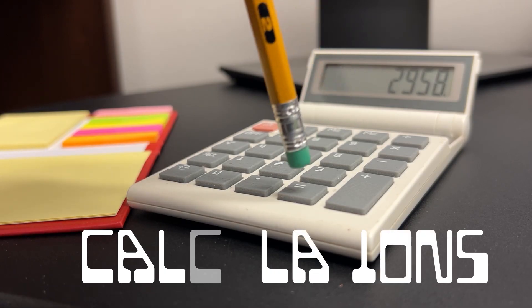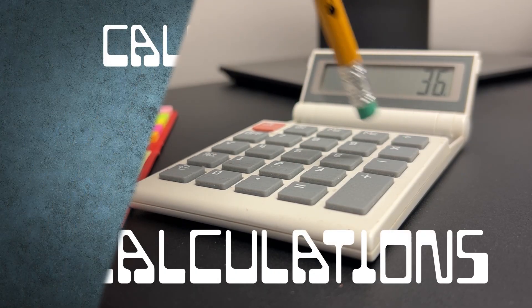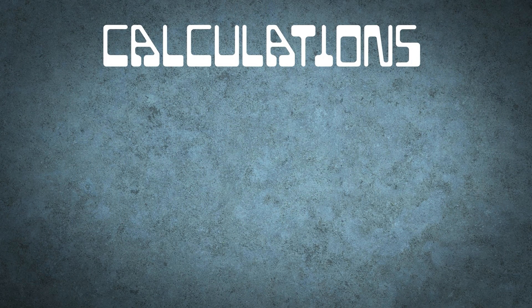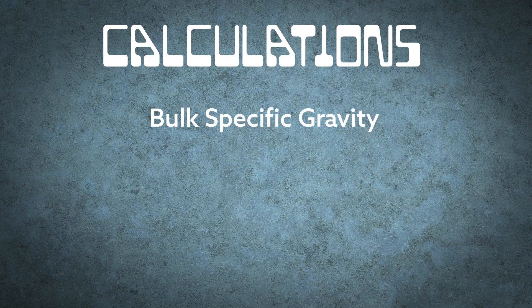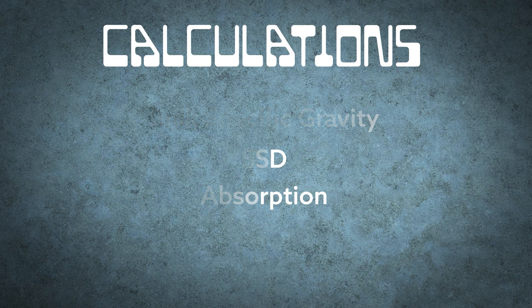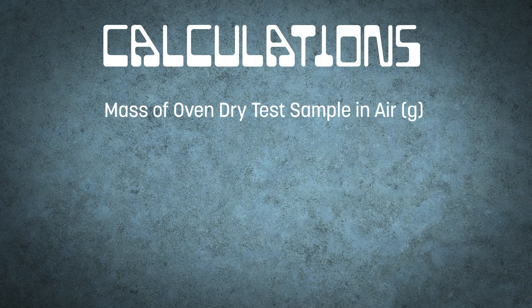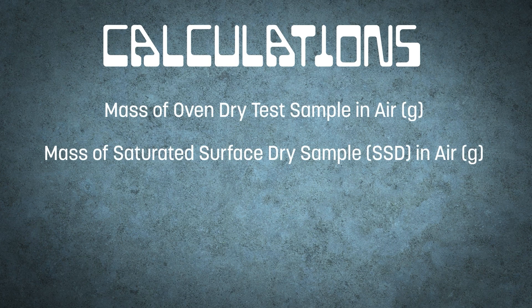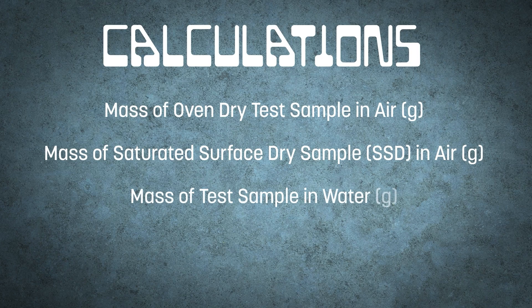Now that we've completed all the physical aspects of our test, we can go ahead and do our calculation for bulk specific gravity SSD, as well as our calculation for absorption. To do this, we'll need three weights: the weight of the oven dried specimen, the weight of the saturated surface dry specimen, and the weight of the specimen submerged in water. These are listed in our manual respectively as A, B, and C.